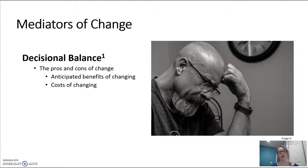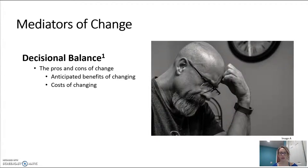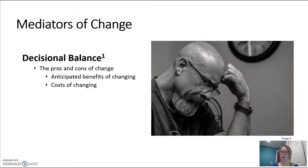There are two mediators of change according to the transtheoretical model, one of which is decisional balance, and this is an important component of the behavior change process. Similar to perceived benefits and perceived barriers in the health belief model, decisional balance involves the weighing of pros and cons towards making a change. A patient will determine whether the anticipated benefits of their change will outweigh the costs of following through with the change. An example of a pro to behavior change would be eating healthy foods can reduce my risk of cardiovascular heart disease, but a con might be eating healthier will be more costly.